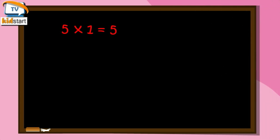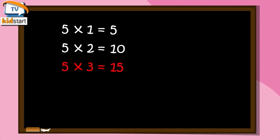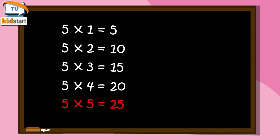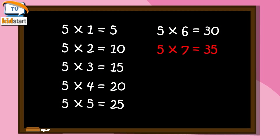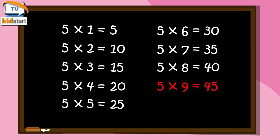Five ones are five. Five twos are ten. Five threes are fifteen. Five fours are twenty. Five fives are twenty-five. Five sixes are thirty. Five sevens are thirty-five. Five eights are forty. Five nines are forty-five. Five tens are fifty.